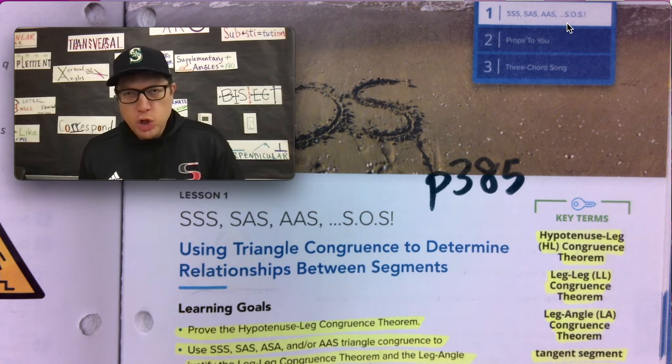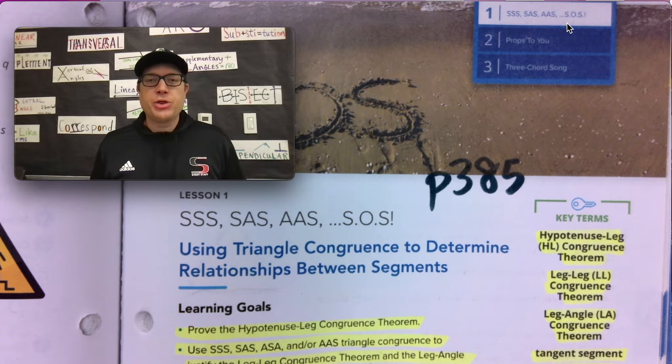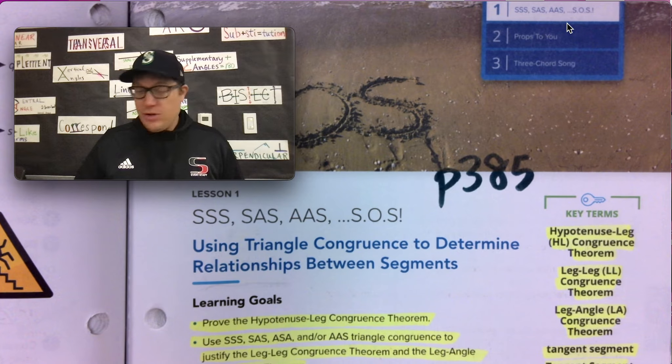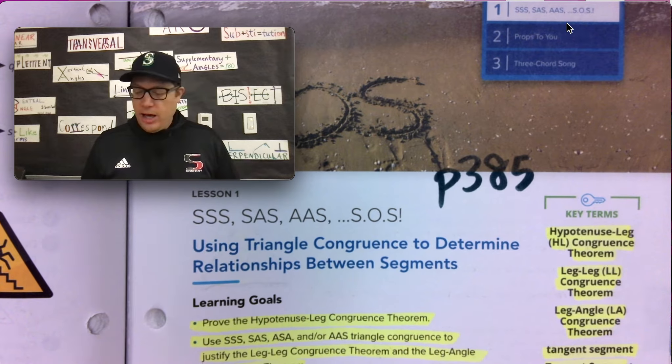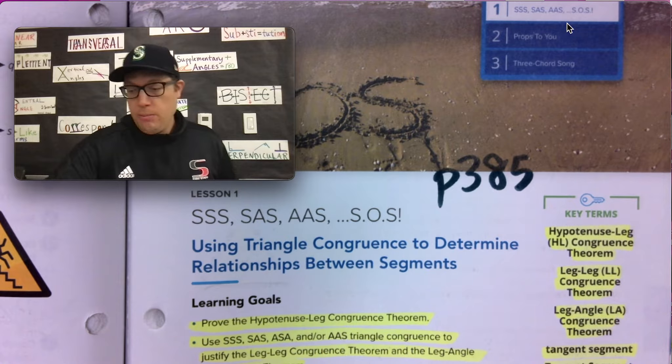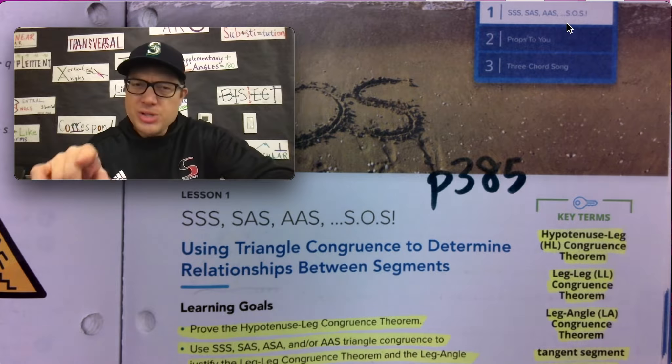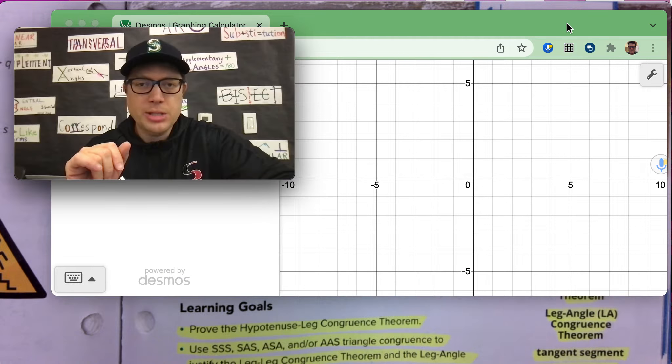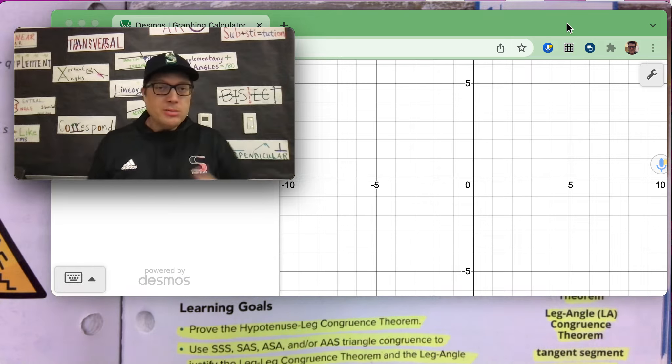We are starting lesson one of topic three out of our module two. Lots of numbers, lots of titles. Have your highlighter ready to go. Have something to write with, maybe like an extra utensil. And then also open up a Desmos window because we're going to be doing some work today using some calculations.